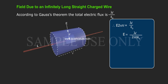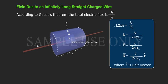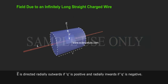E = λ/(2πRε₀). E⃗ = λ/(2πRε₀) R̂, where R̂ is unit vector. E⃗ is directed radially outwards if Q is positive and radially inwards if Q is negative.